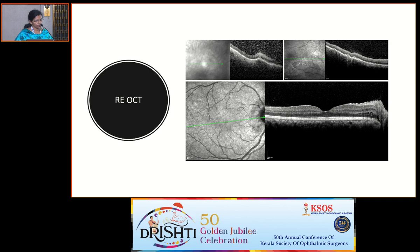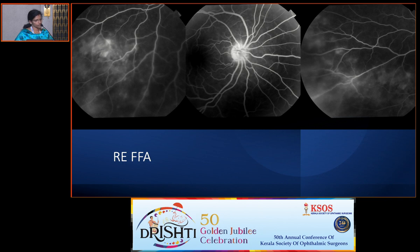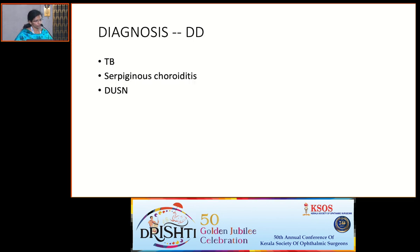On right eye OCT scan, the fovea was normal with no macular edema. Scan sections through the peripheral lesions showed choroidal involvement, retinal involvement, and overlying vitreous cells. The FFA picture of the right eye showed a hot disc with disc leak and in the periphery there were hyperfluorescent lesions with minimal vasculitic changes. This FFA was taken after approximately one month of steroid treatment.